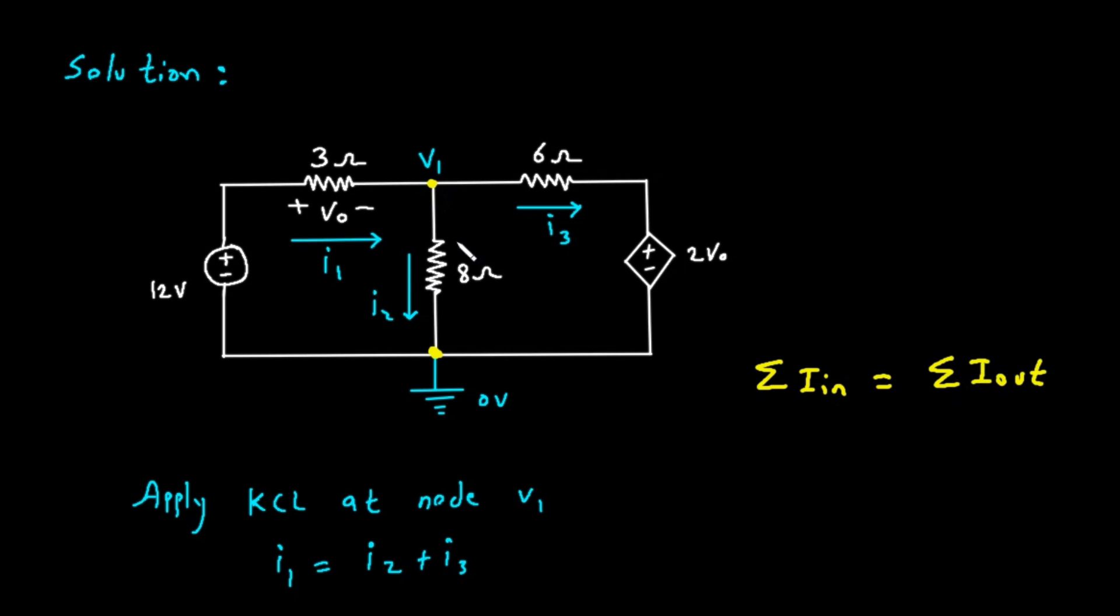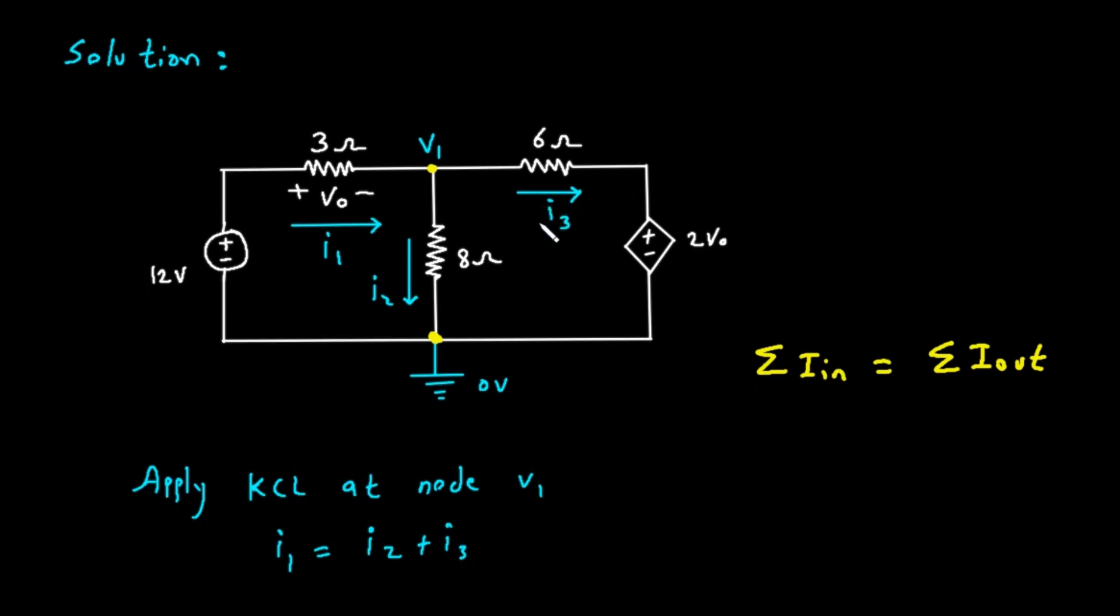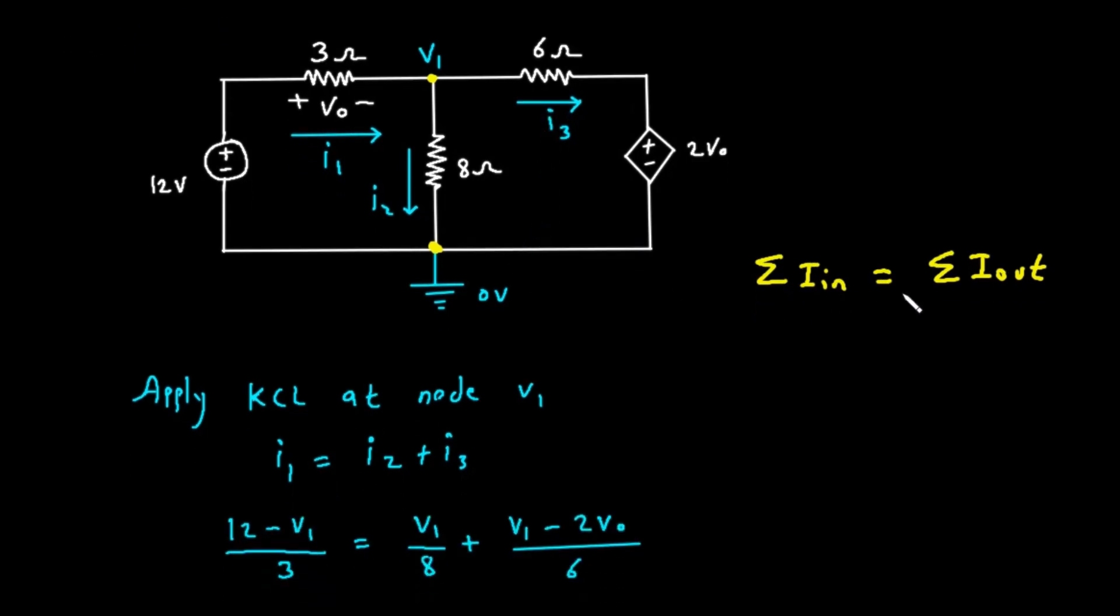V sub 1 represents the voltage at that point with respect to our 0 volt ground. The core of nodal analysis is applying Kirchhoff's Current Law, or KCL, at each unknown node. KCL states that the total current entering a node must equal the total current leaving that node. Let's focus on our node V sub 1. We'll define three currents. I sub 1 is the current flowing from the 12 volt source, through the 3 ohm resistor, and into node V sub 1.